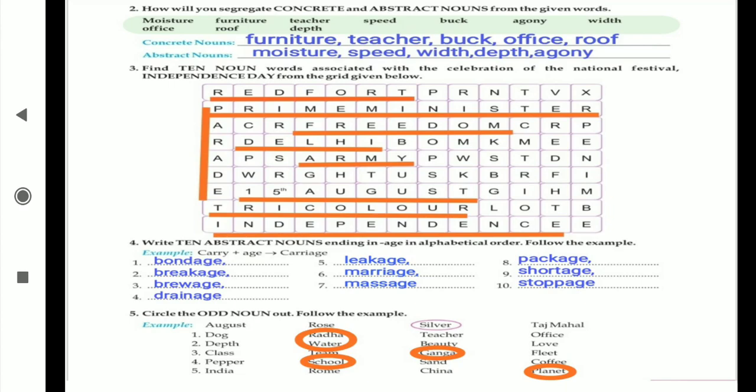Now fourth question is: Write abstract nouns. Abstract nouns means which we can feel but we can't touch, ending in 'age', which words are going to end with 'age' only, in alphabetical order. Follow the example.